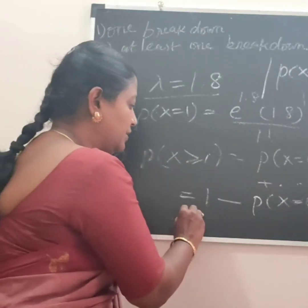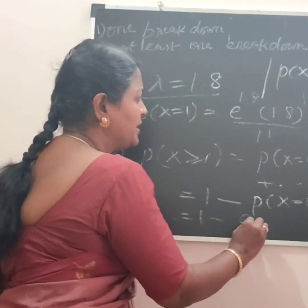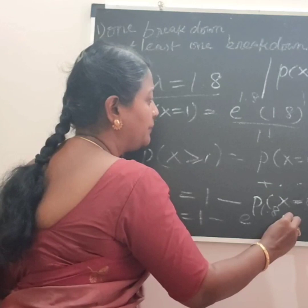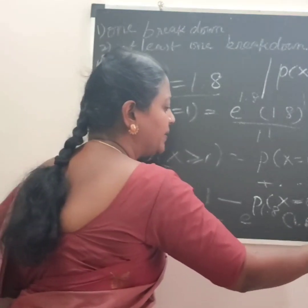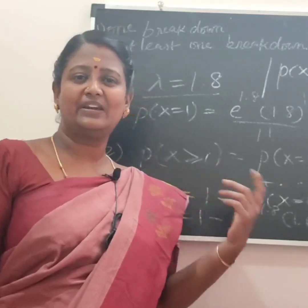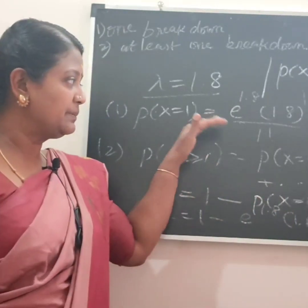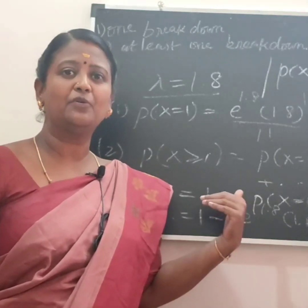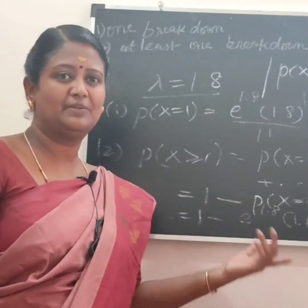That is equal to 1 minus P(X = 0). So probability equals 1 minus e to the power minus 1.8, times 1.8 to the power 0, divided by 0 factorial. Since 0 factorial equals 1, this simplifies easily. Compared to Binomial, this is very simple.